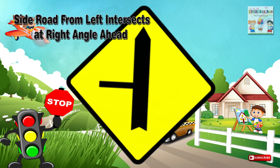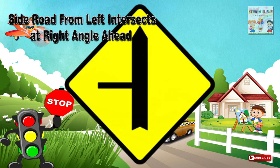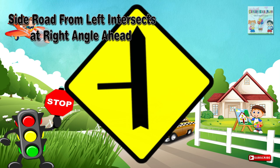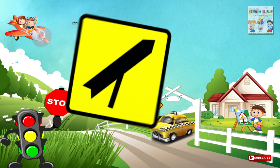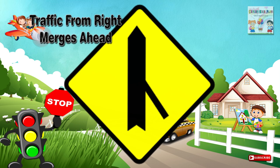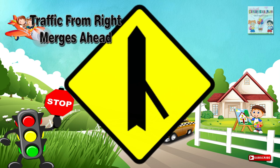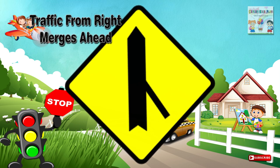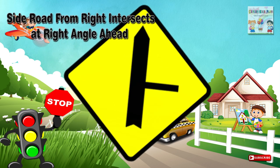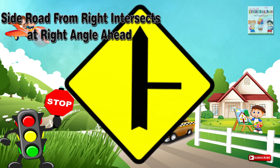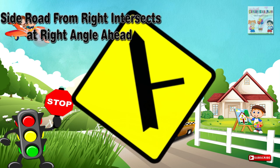Eighteen: Side road from left intersects at right angle ahead — a junction ahead where a side road on the left intersects the major road at right angles. Nineteen: Traffic from right merges ahead — a junction ahead where a side road on the right merges with the major road. Twenty: Side road from right intersects at right angle ahead — a junction ahead where a side road on the right intersects the major road at right angles.